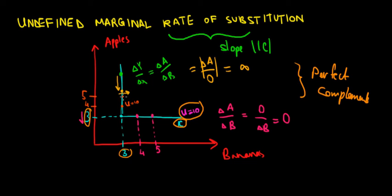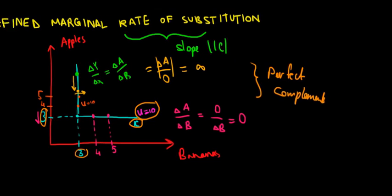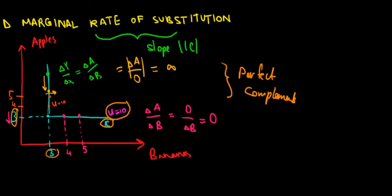So the idea of perfect complements is that we do not want more of one good in isolation because we need them in complements, in combination. That's literally what it means. So we need here specific combinations of apples and bananas, and that's why the willingness to exchange is undefined.